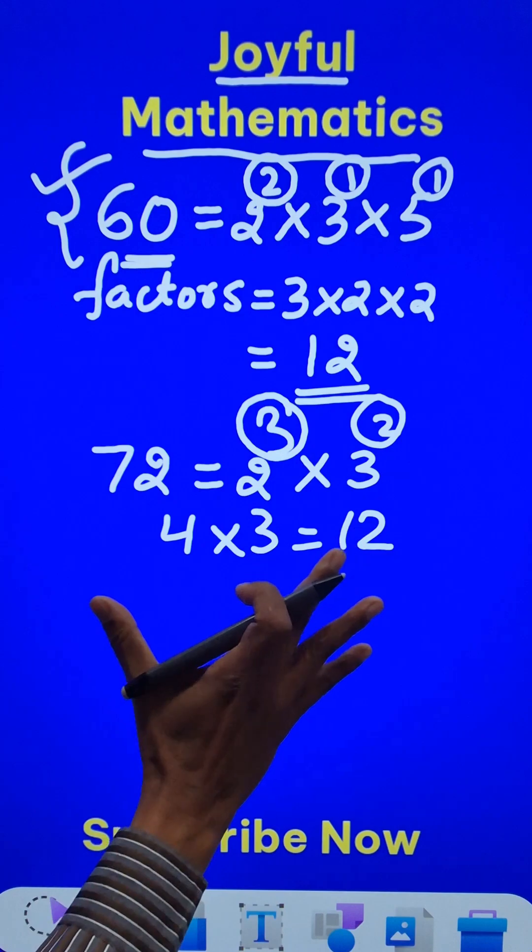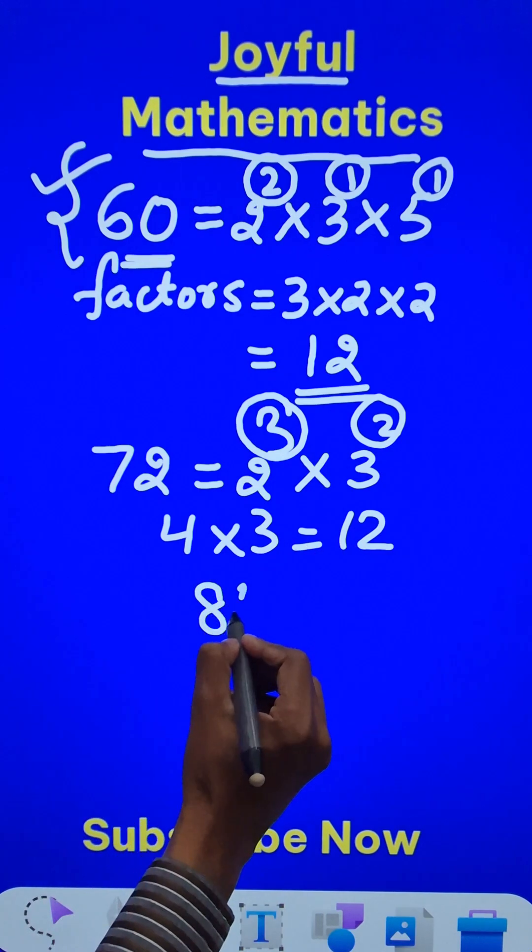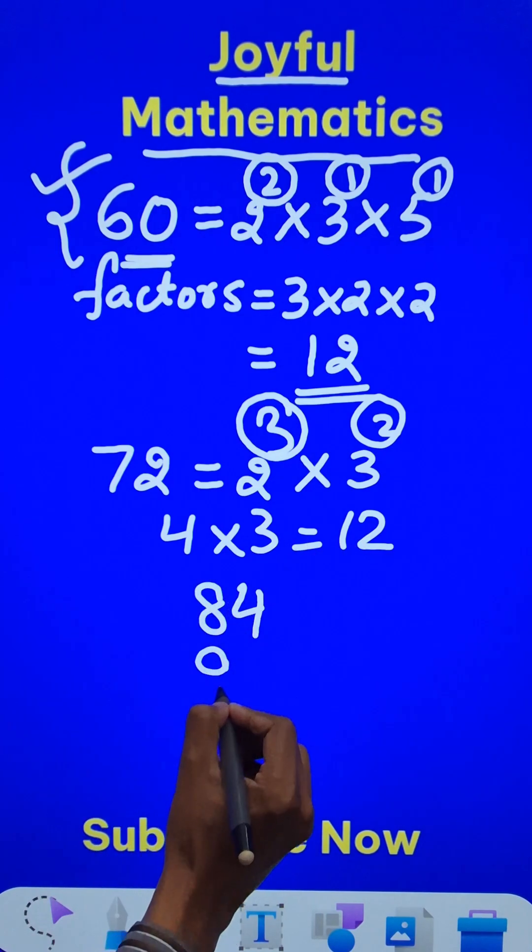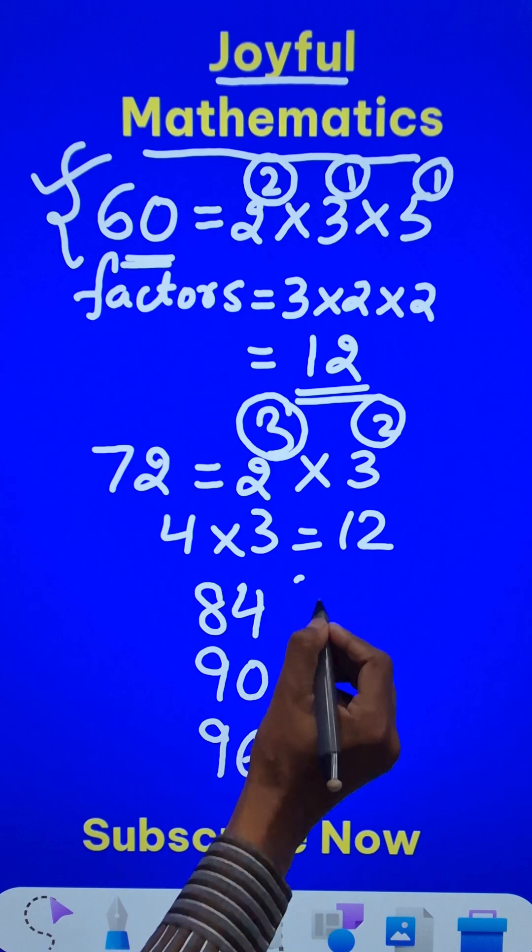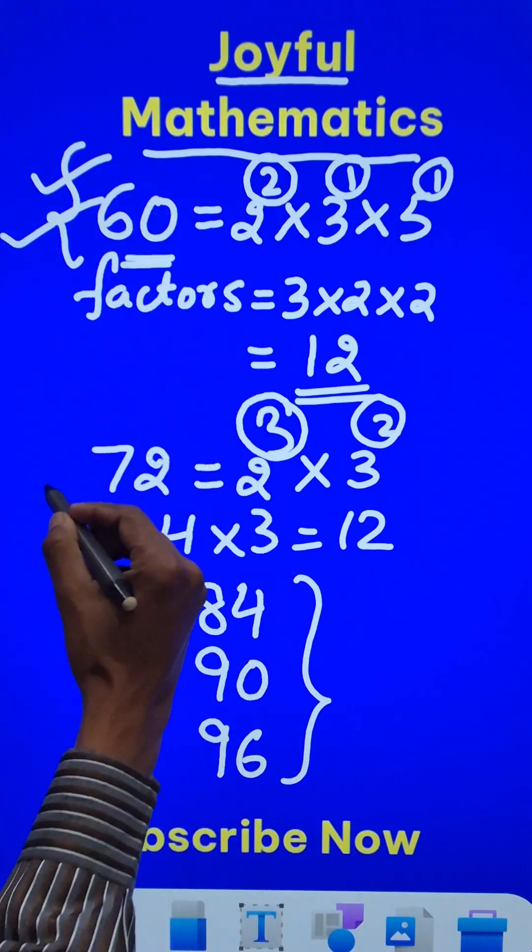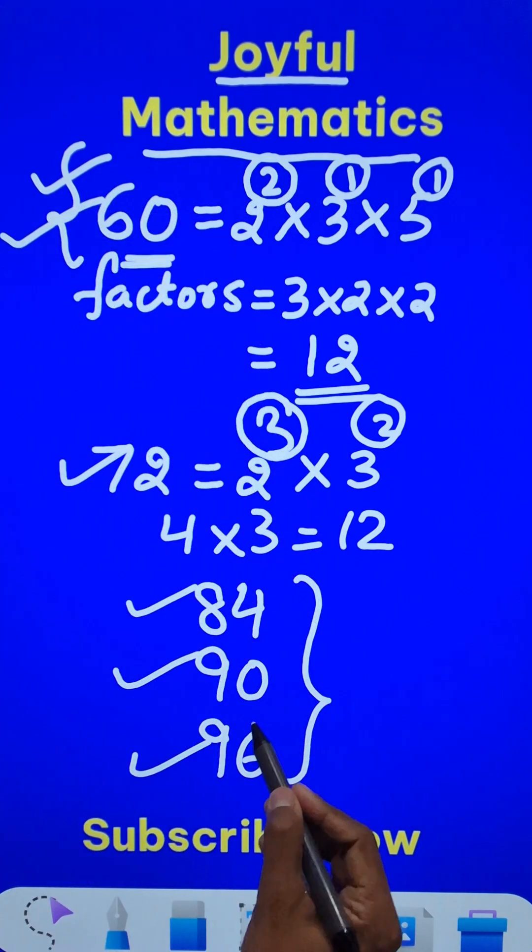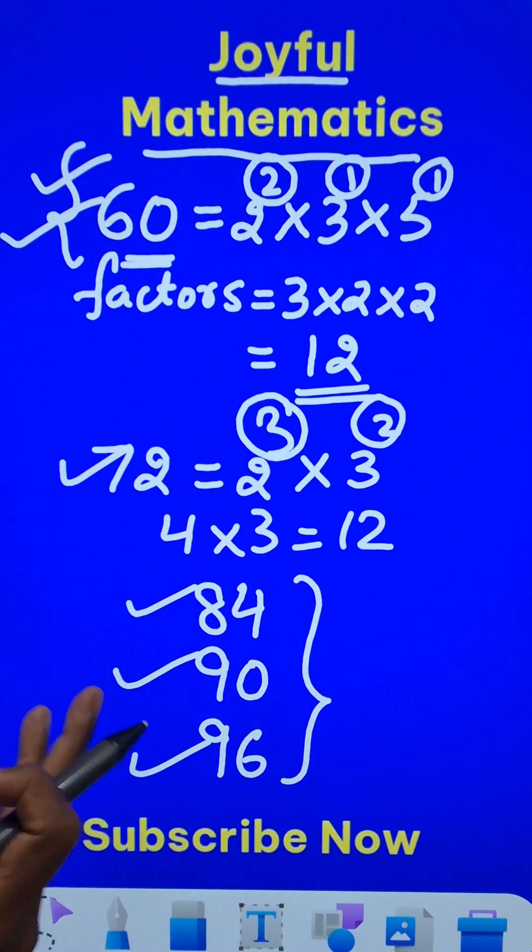And 3 more numbers which have 12 factors are 84, also has 12 factors, and then 90 and 96. These 5 numbers: 60, 72, 84, 90 and 96, all of them have 12 factors each.